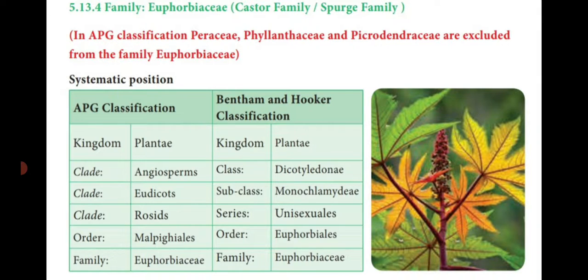This family is otherwise known as Castor family. In Tamil it is known as Amanak — the plant from which castor oil is obtained. That is said to be the Castor family.